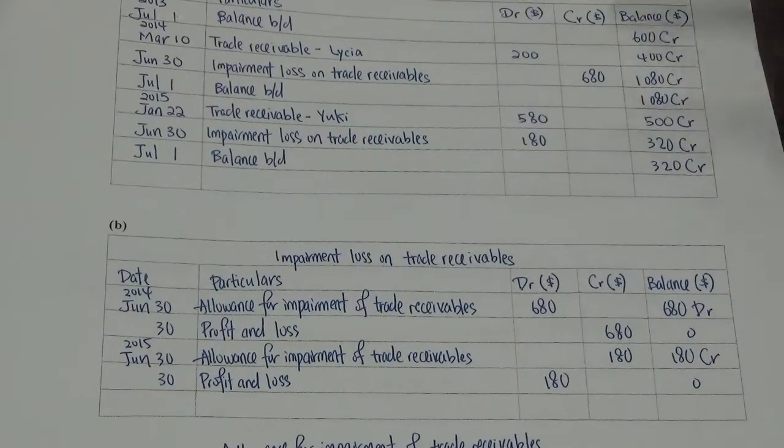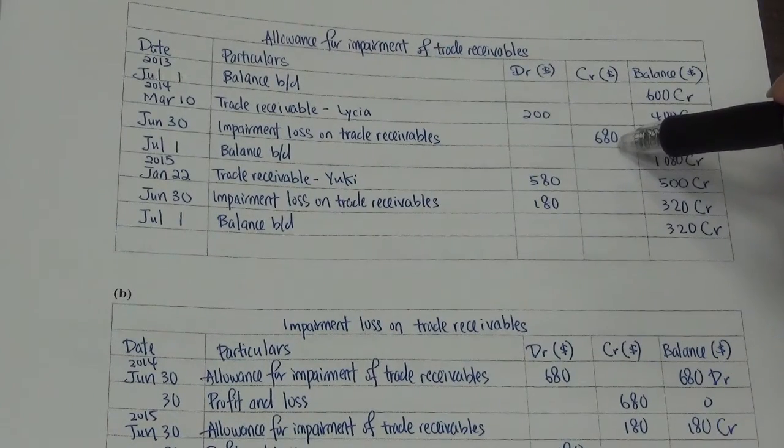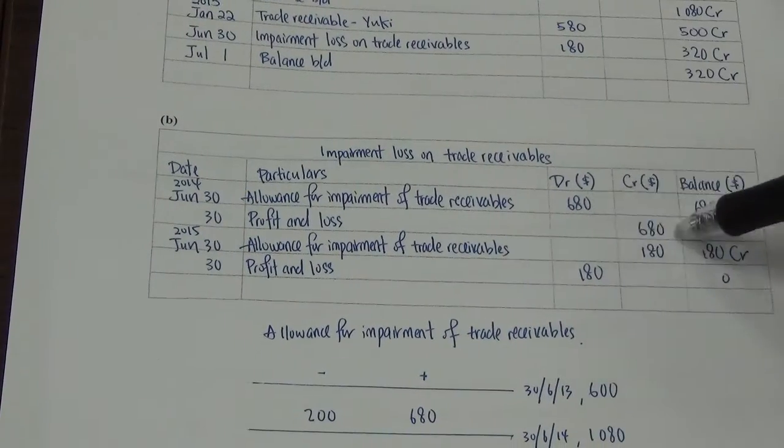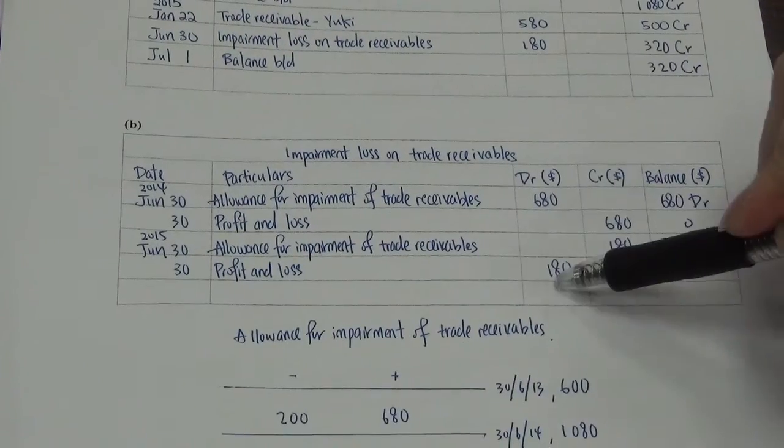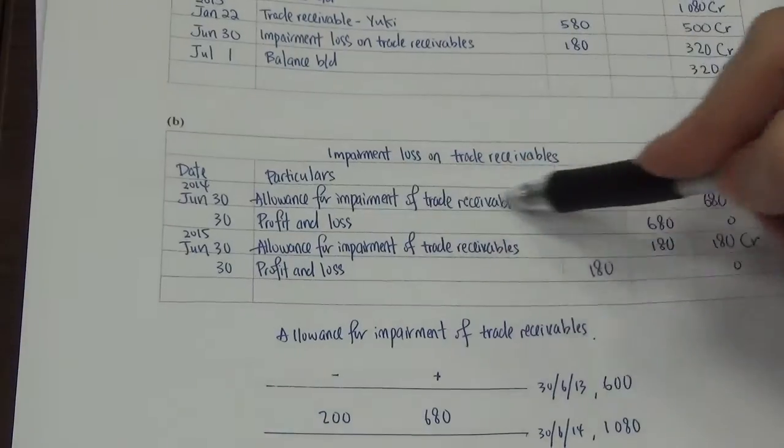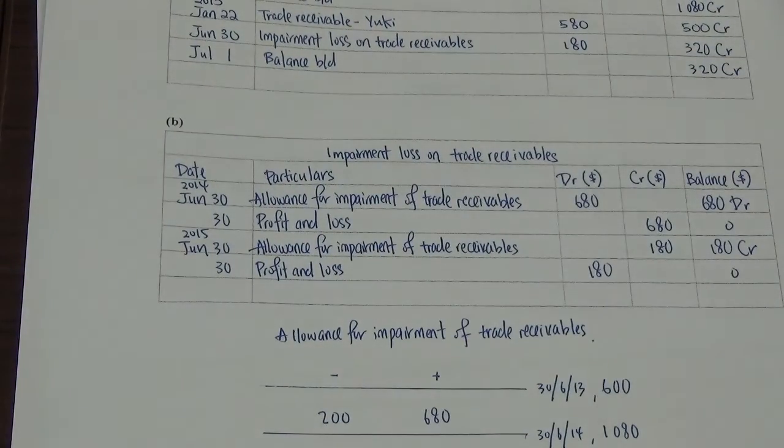As for the impairment loss, very straightforward. Go on top, look for impairment loss. Impairment loss on the right will go to the left. Left will go to the right. So right, go left. Then jump again, right, profit and loss. Left, go right. Jump again, go back, put profit and loss. Just put, this one must put allowance. This one must put profit and loss. Allowance, profit and loss. Finish.